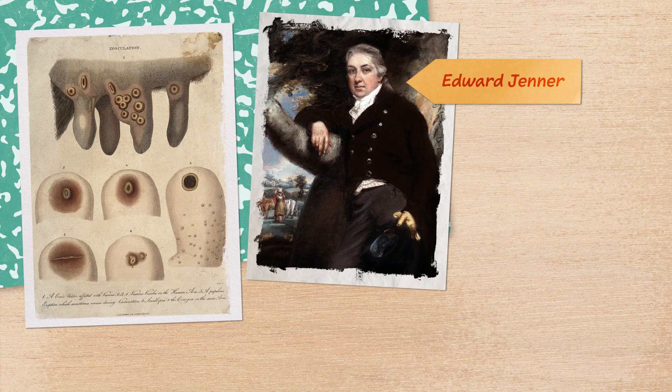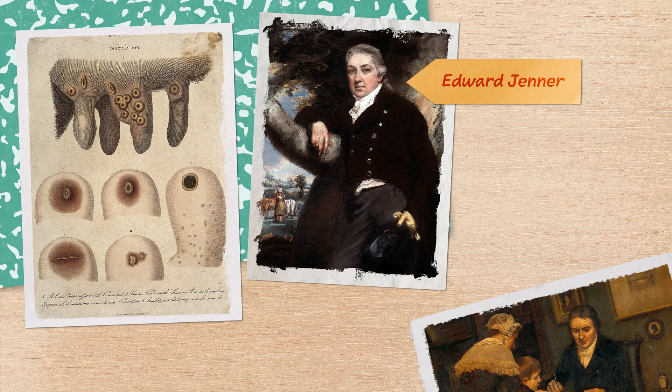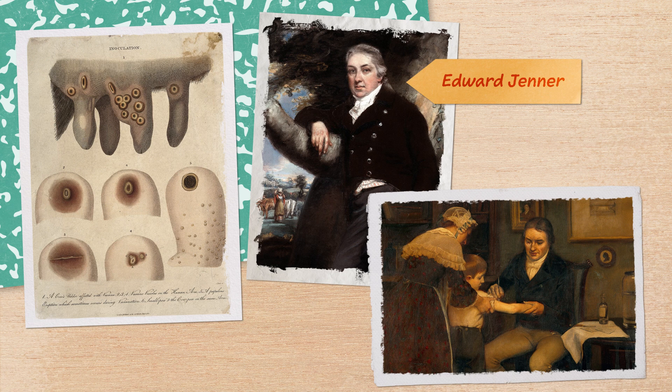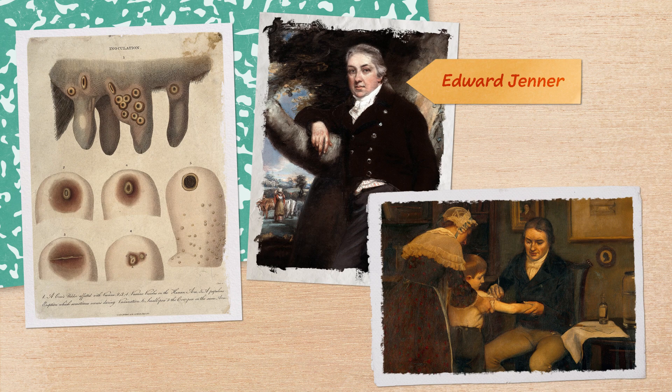So a British doctor named Edward Jenner came up with the very cool, if ethically questionable, idea of slicing open the arm of an eight-year-old boy and just shoving some cowpox into it to see if it would make him immune to smallpox. Which, thankfully, it did.